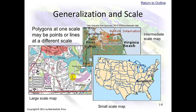Here's another generalization image. Here's a large scale map, an intermediate scale map, and a very small scale map. Small scale maps show more area than large scale maps. Notice in this image the town of Portsmouth is a point, here it looks like a polygon, and here it isn't even represented — we're actually down to individual features within the town of Portsmouth.